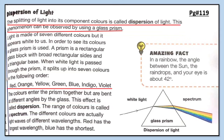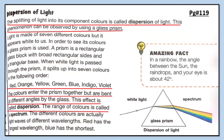The seven colors of the spectrum are: red, orange, yellow, green, blue, indigo, and violet. The colors enter the prism together but are bent at different angles by the glass — this effect is called dispersion. The range of colors produced is called a spectrum — that band of colors is called a spectrum.